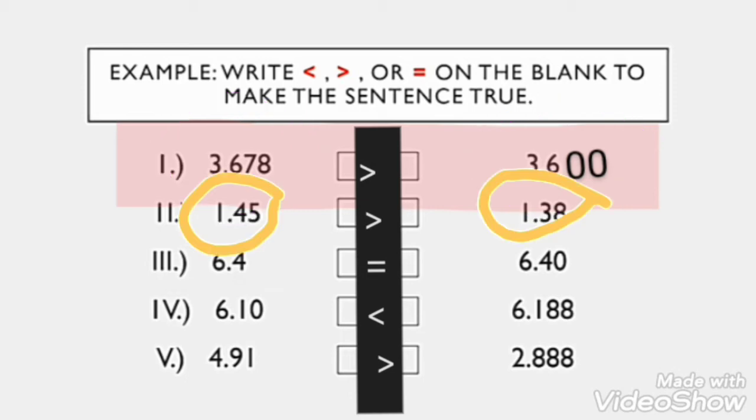For number 2, we have 1.45 is greater than 1.38. If we are going to compare, both numbers have the same amount of digits, which is 3. In this number, 1.45 is greater than 1.38 because 4 is greater than 3.